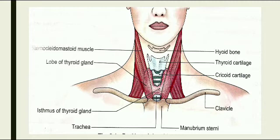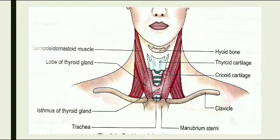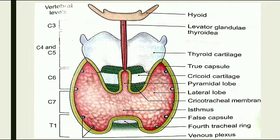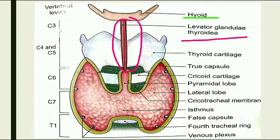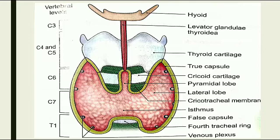The pyramidal lobe may be projected upwards and can be present on the isthmus or on any of the lobes, though it is not present in all cases. In the detailed diagram you can see the hyoid bone and the levator glandulae thyroidea — a fibrous muscular band that descends from the body of the hyoid bone to the isthmus.